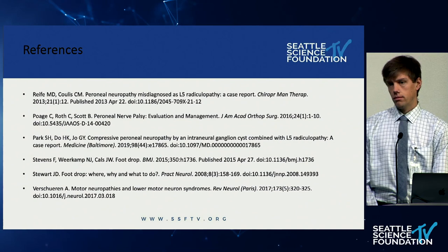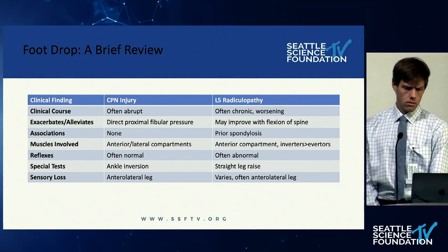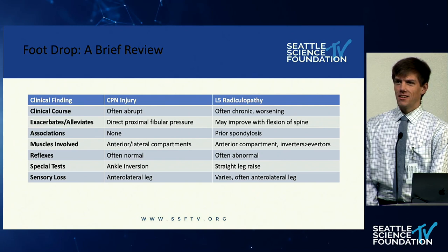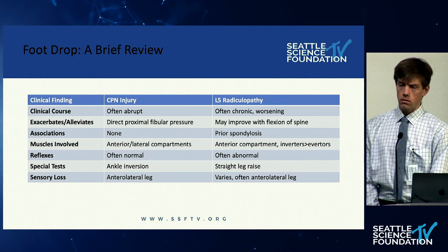The attending points out a very significant clinical differentiation not shown in the presentation — asking the student to go back to the differential diagnosis slide. He notes there is a significant motor deficit difference between an L5 radiculopathy and a common peroneal nerve palsy, specifically a muscle that is very importantly affected by L5 radiculopathy but not as adversely affected by CPN injury.